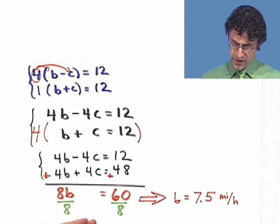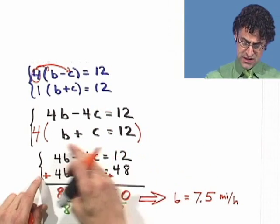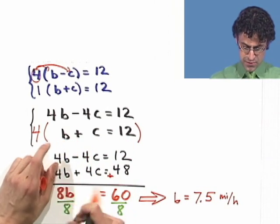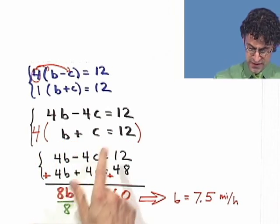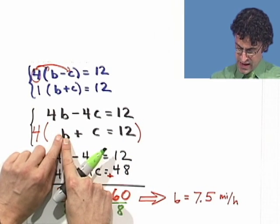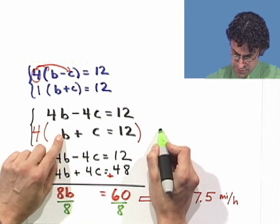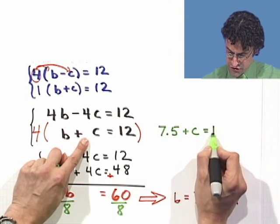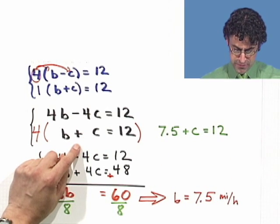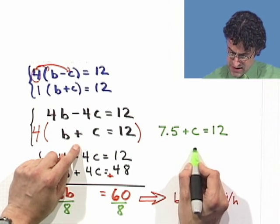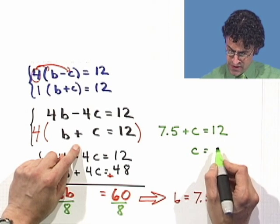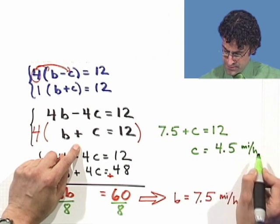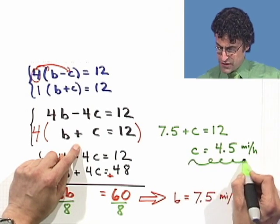How would we now go about finding the current's rate? Well, we can go back to any of these equations and just substitute the b value and solve for the c. I'll pick this one because it seems like the easiest one. So I'll take this equation right here and for b I'm going to put in 7.5 plus c equals 12. And now if I subtract 7.5 from both sides, what I see is c equals 12 minus 7.5, which is 4.5 and again the units are miles per hour.